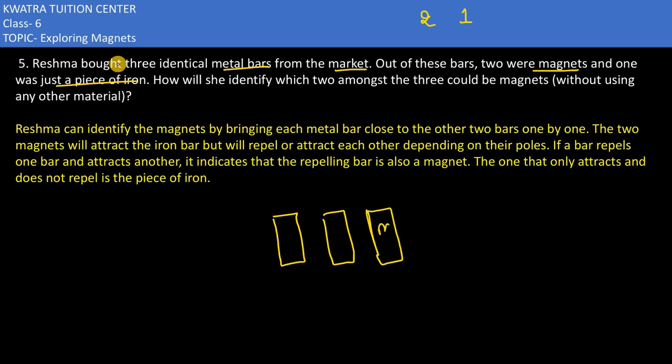What will happen? One is a metal. How can we know if it is a bar magnet or not? What will happen if it is metal or not?